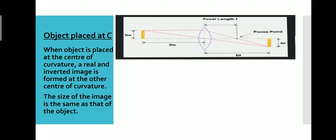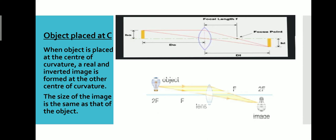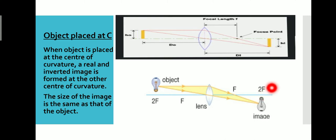Next is the object placed at C. When the object is placed at the center of curvature C — that is, at 2F — a real and inverted image is formed on the other side of the center of curvature. The size of the image is the same as the size of the object. The image will be formed on the other side of the lens, also at 2F. The image is the same size, real, and inverted.